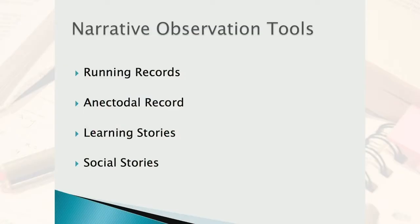A few of the different types of narrative observation tools include a running record, anecdotal records, learning stories, and social stories. A running record is documentation that is ongoing — you're continually adding to it. You'll have a specific behavior or reason why you're documenting, which is really important. That running record will end when you have sufficient data to help you with your tool.